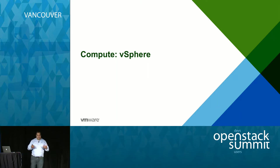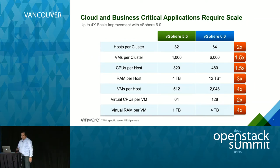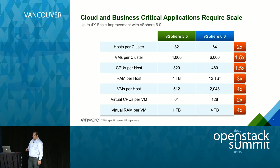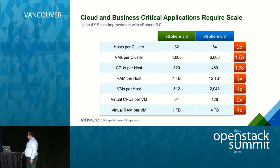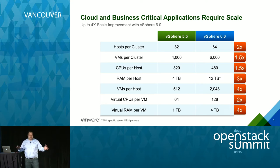Let's start from vSphere. We introduced vSphere 6 very recently and we're very proud of this release. We've stretched the bar in terms of performance, VMs and hosts per cluster, and RAM per host. For example, we now support four terabytes of RAM or up to 2,000 VMs per host — that's because that's the biggest system we could get our hands on to test.